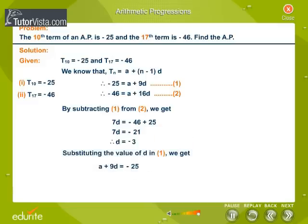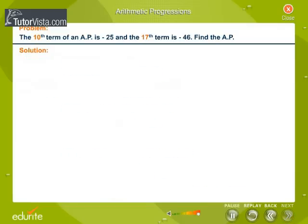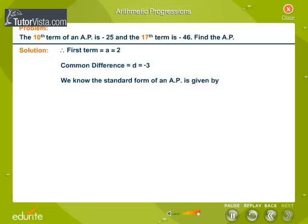Now obtain the value of 'a' by substituting the value of 'd' in equation 1. Therefore, the first term of the AP is equal to 2 and the common difference is minus 3.